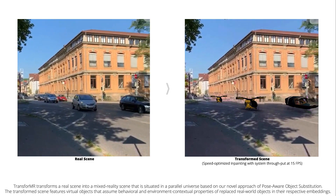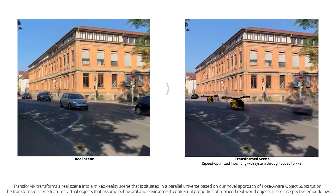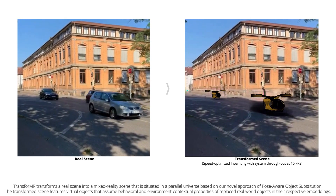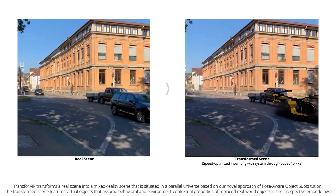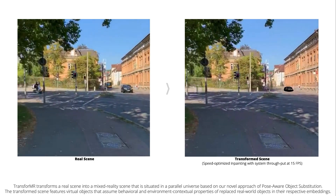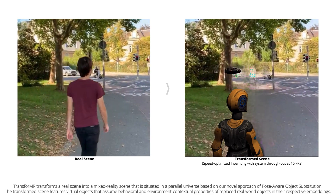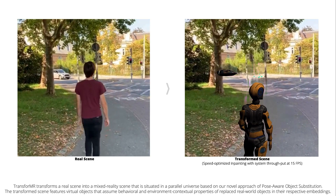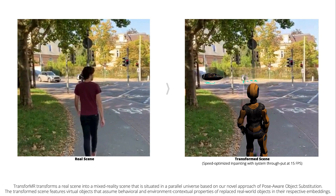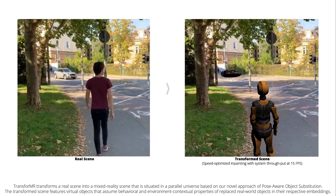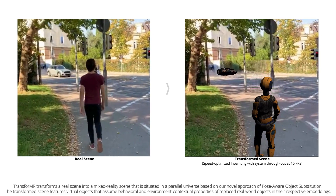Transformer transforms a real scene into a mixed reality scene that is situated in a parallel universe, based on our novel approach of pose-aware object substitution. The transformed scene features virtual objects that assume behavioral and environment-contextual properties of replaced real-world objects in their respective embeddings.